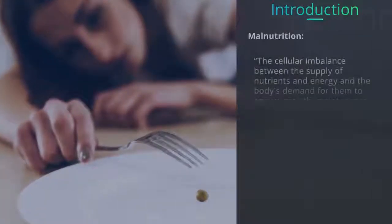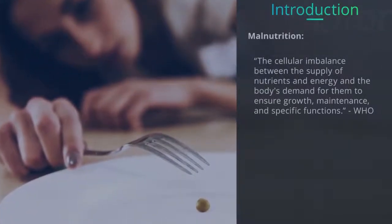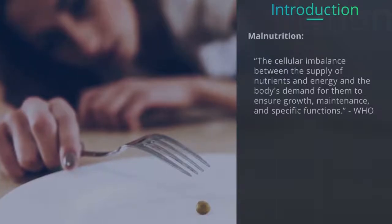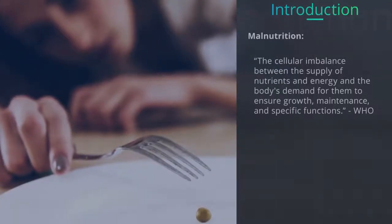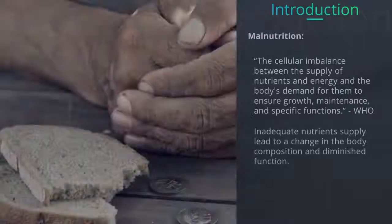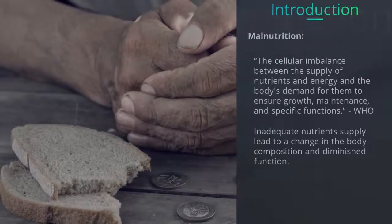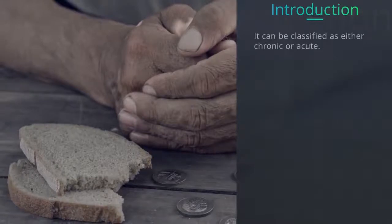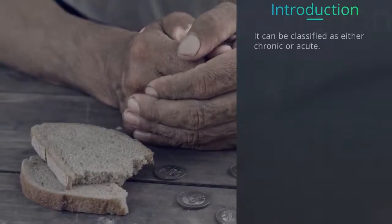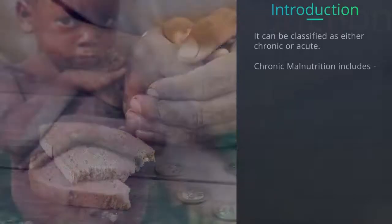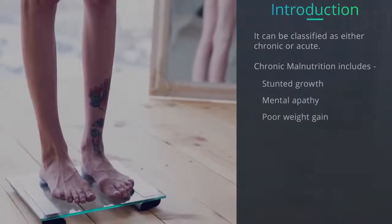Malnutrition, as defined by the World Health Organization, is the cellular imbalance between the supply of nutrients and energy and the body's demand for them to ensure growth, maintenance, and specific functions. Inadequate nutrient supply leads to a change in body composition and diminished function. Malnutrition can be classified as either chronic or acute. Chronic malnutrition includes stunted growth, mental apathy, and poor weight gain.